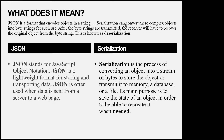JSON stands for JavaScript Object Notation - it's a lightweight format for storing and transporting data, which makes sense because that's our pay data. JSON is often used when data is sent from a server to a web page, which is also what's happening here. Serialization is the process of converting an object into a stream of bytes to store or transmit it to memory, a database, or a file. Its main purpose is to save the state of an object in order to recreate it when needed - and that's what was not working.